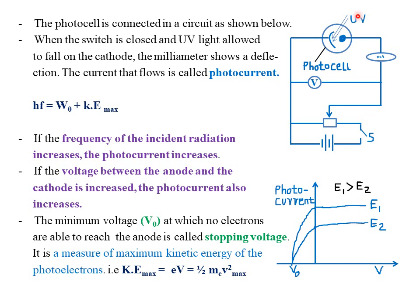When we close the switch, ultraviolet radiation falls onto the cathode of the photocell. Photoelectric emission takes place: the energy of the ultraviolet radiation equals the work function of the photocell plus the maximum kinetic energy of the emitted electrons. The ultraviolet radiation ejects electrons from the cathode, and those electrons are accelerated towards the anode because of the higher potential difference. They also possess kinetic energy from the incident radiation after the work function has been subtracted. The movement of electrons is enhanced by the anode attracting the negatively charged electrons, closing the gap.